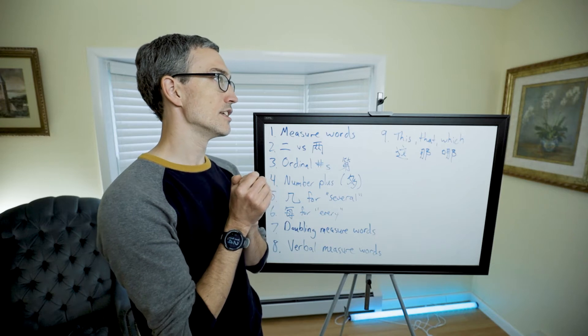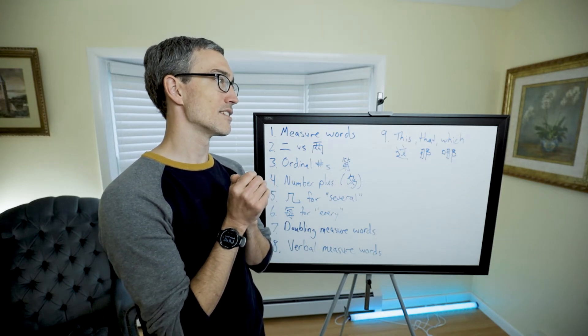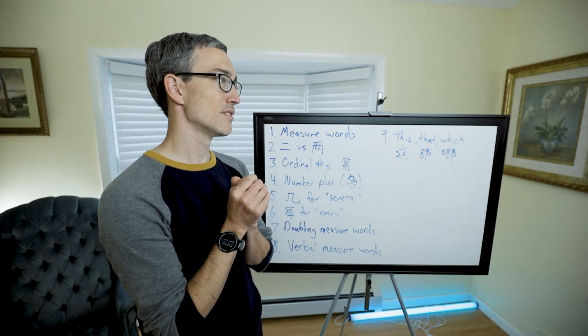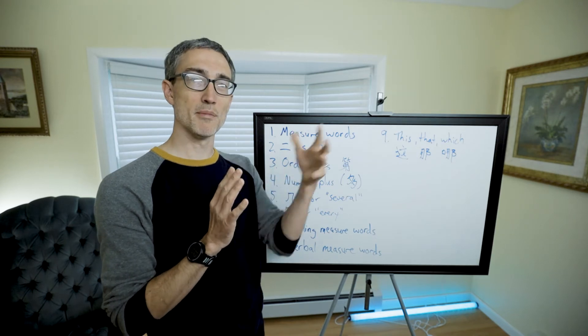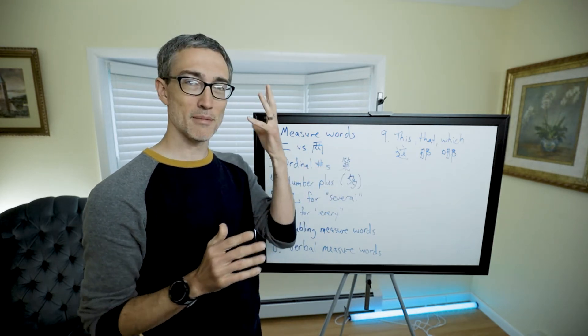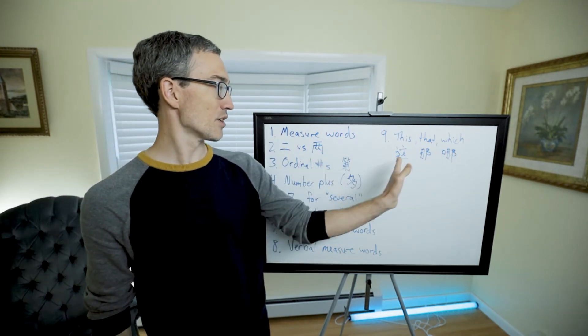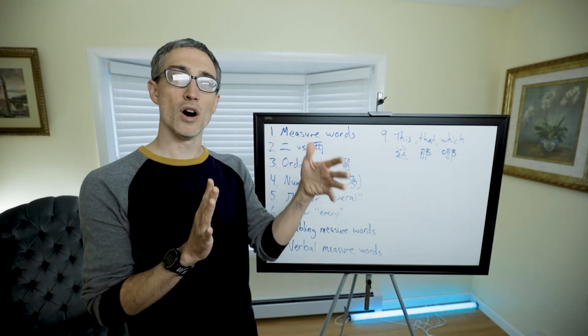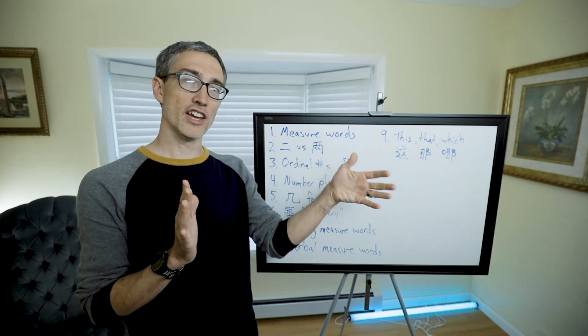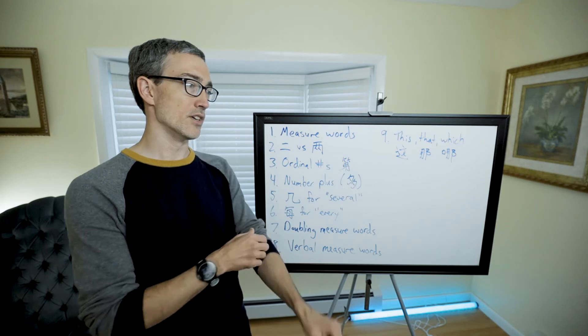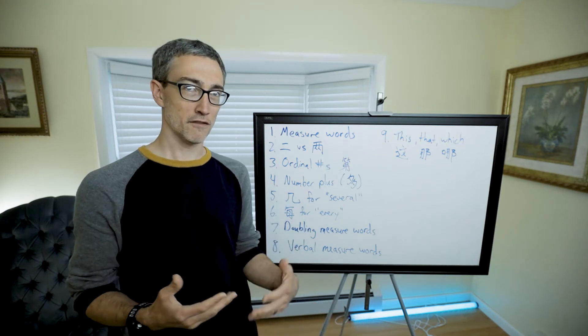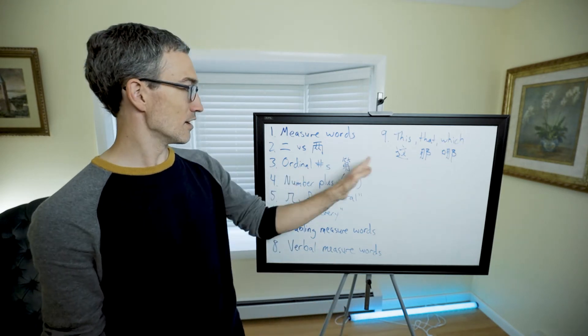Whether it's a number by itself, 第十 (dì shí), 第二 (dì èr), 第十 (dì shí), usually there's going to be a measure word after it. Like the second one or the third thing or the forty-fifth dumpling, whatever.